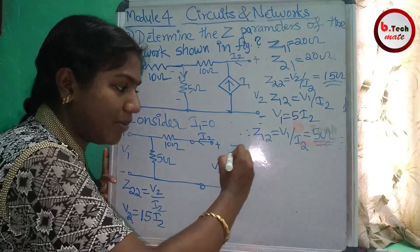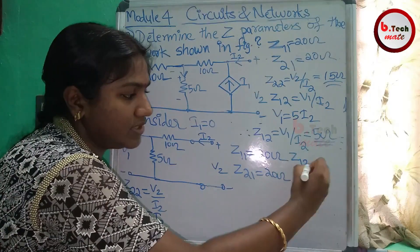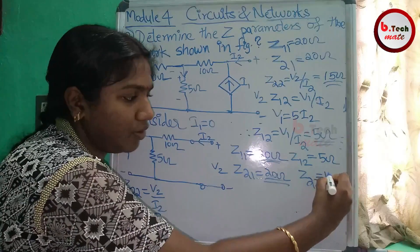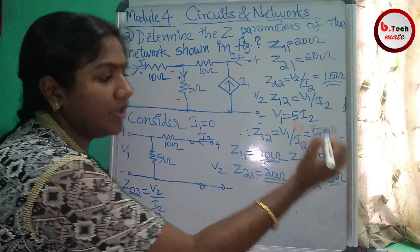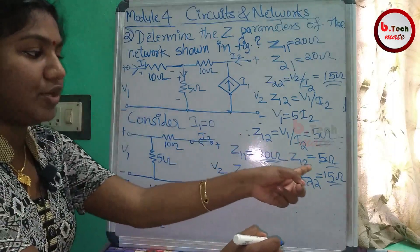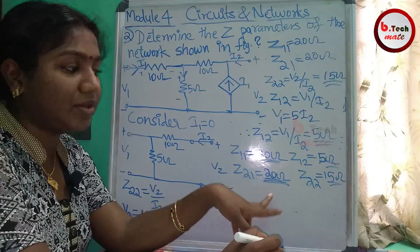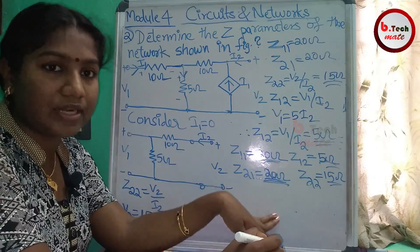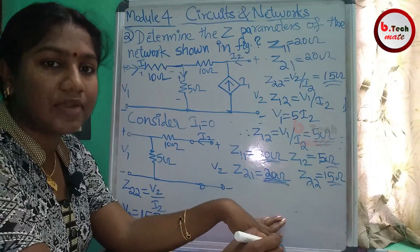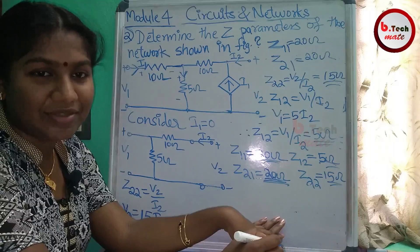Let's compile the Z-parameters: Z11 equals 20 ohm, Z21 equals 20 ohm, Z12 equals 5 ohm, and Z22 equals 15 ohm. Note that Z12 and Z21 have different values — this is because the network contains a dependent source. With independent sources only, Z12 and Z21 would be equal (reciprocal network). Here, with a dependent source, they differ. That concludes finding all the Z-parameters.